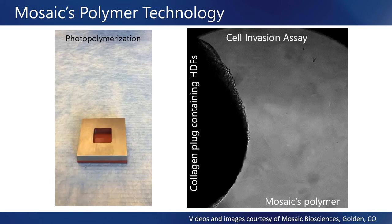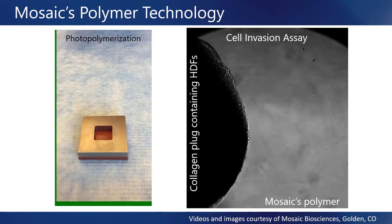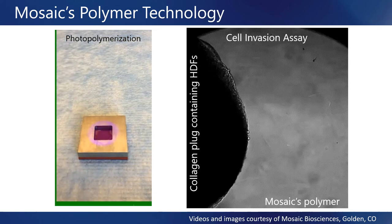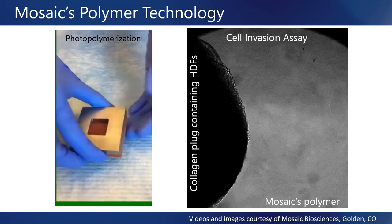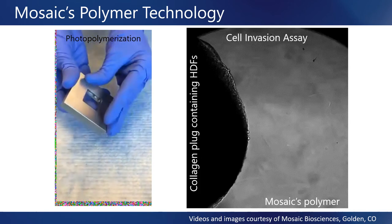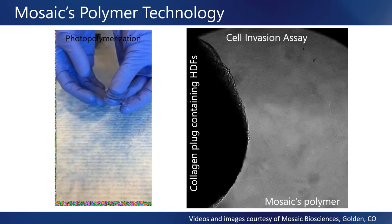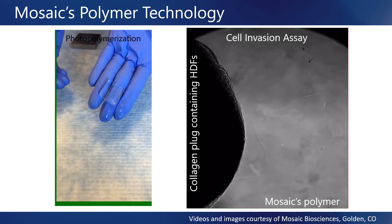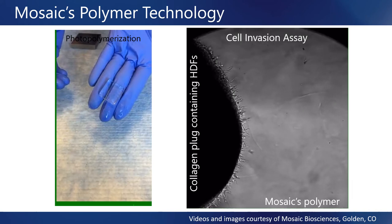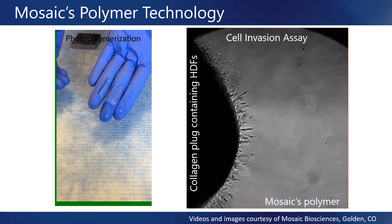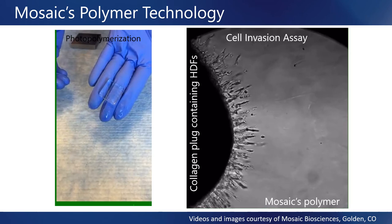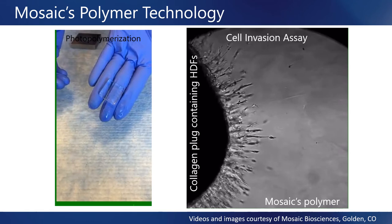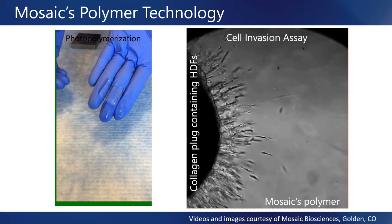To show these processes in more detail, I've borrowed some videos and data from Mosaic Biosciences, a company that I helped found in 2009 to develop biomaterials for wound healing and drug delivery. Mosaic uses a proprietary polymer technology to create degradable scaffolds for cells and tissues. In the video on the left, you'll see an example of this photopolymer technology in which a monomer solution is added to a mold and polymerized rapidly by exposure to 385 nanometer light. As a demonstration of these materials' ability to scaffold cellular migration and proliferation, we set up what we called cell invasion assays. In the experiment shown in the video on the right, human dermal fibroblasts were seeded into a collagen plug, which was then encapsulated in our material. Using light microscopy, we were able to observe cells migrating out of the collagen plug and into our polymer, as shown in the time-lapse video.